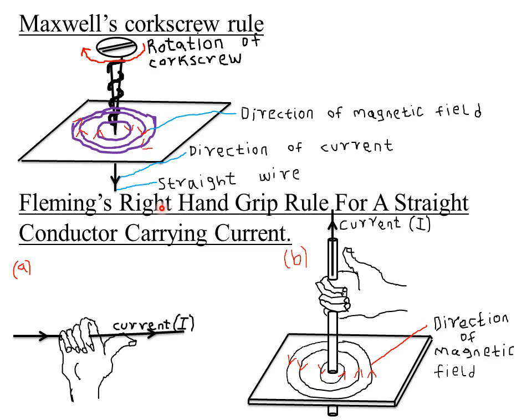The first thing to note when using the right-hand grip rule is that you should always use your right hand when grasping your conductor. Assuming this is the conductor and the current is flowing in the forward direction as indicated by the arrow, the right-hand grip rule instructs that the conductor carrying current is grasped in the right hand.